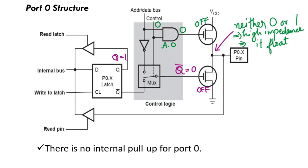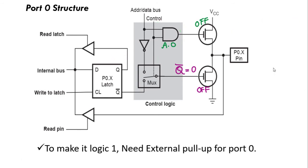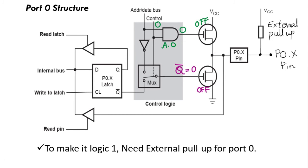It is neither 0 nor 1 — this is known as the high impedance state, where it floats in the middle. Since it floats and is neither logic 0 nor logic 1, if you want, you can add an external pull-up. Port 0 can then be used properly as an input or output port.